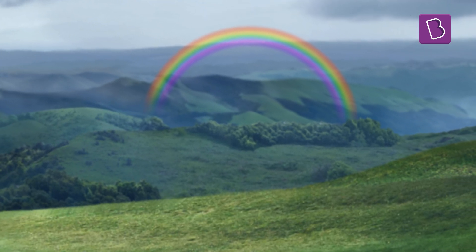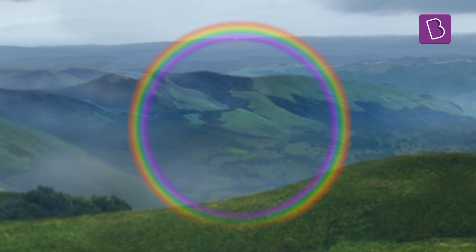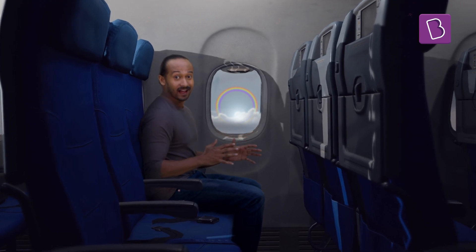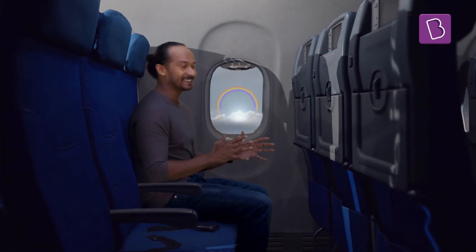Rainbows appear bow-shaped, but what if I told you that they actually form in circles? It's just that when you're on the surface, the bottom half of the rainbow is hidden by the ground. If you are up in the sky, you would now see the entire circle.